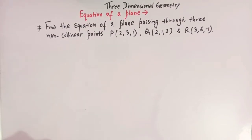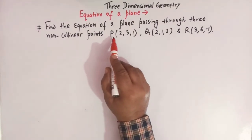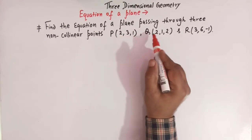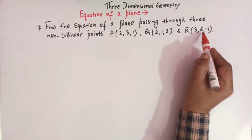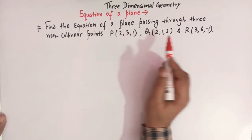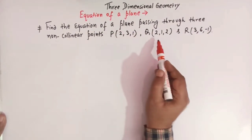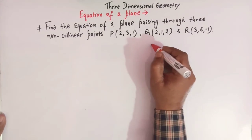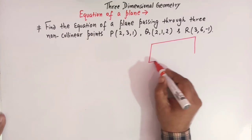Hello viewers, in today's class we are going to discuss one important problem from three-dimensional geometry. The problem is related to finding the equation of a plane which passes through three non-collinear points. The coordinates of the points are given as P(2,3,1), Q(2,1,2), and R(3,6,-1). We have to find the equation of the plane which passes through these three non-collinear points.